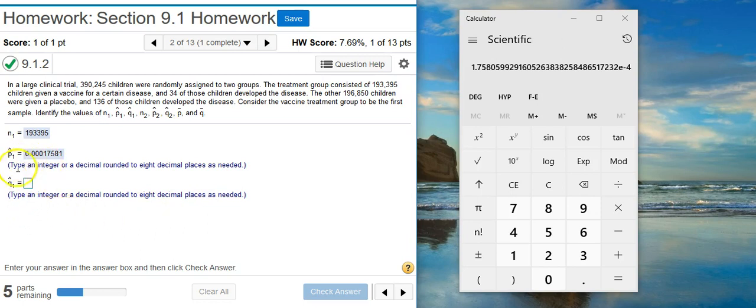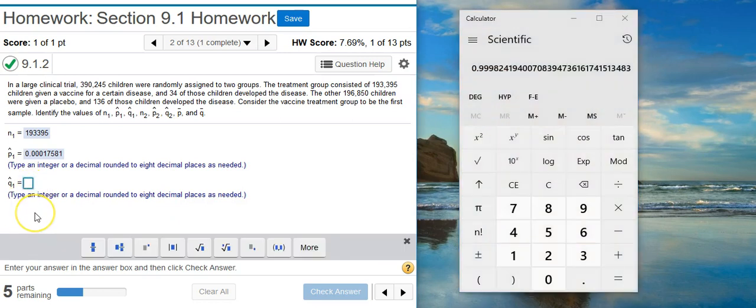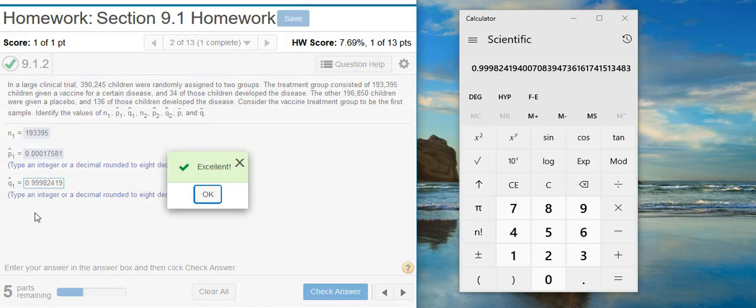Q-hat is just a complement of P-hat. So, to get that, we're just going to subtract this value from 1. Instead of typing this number in again, I could say 1, minus, and then type this number in again. But, I don't want to have to do the typing. I'm a little lazy. So, I'm just going to make that number negative and then add it to 1. It gives me the same effect. So, now I need to take this number up to 8 decimal places. Excellent!